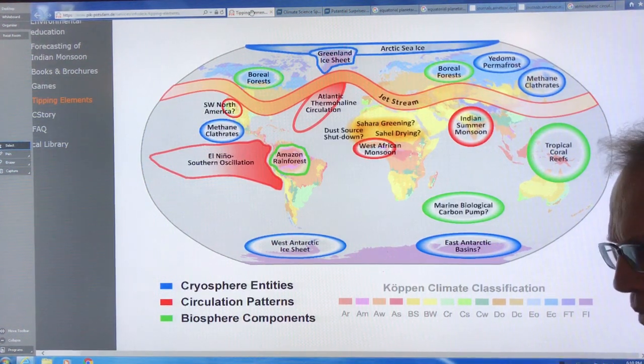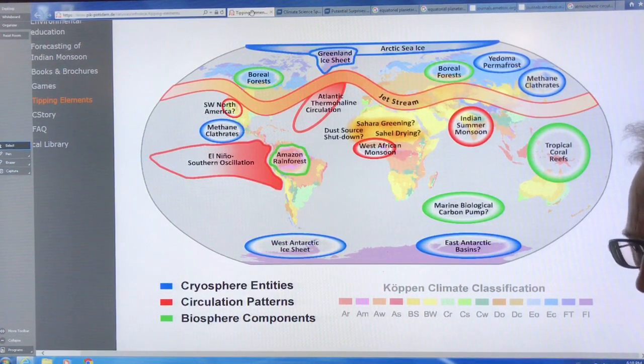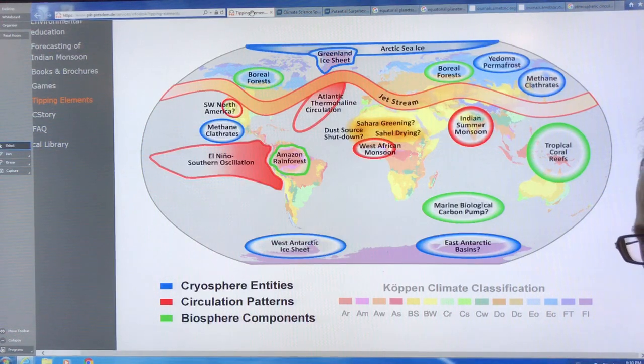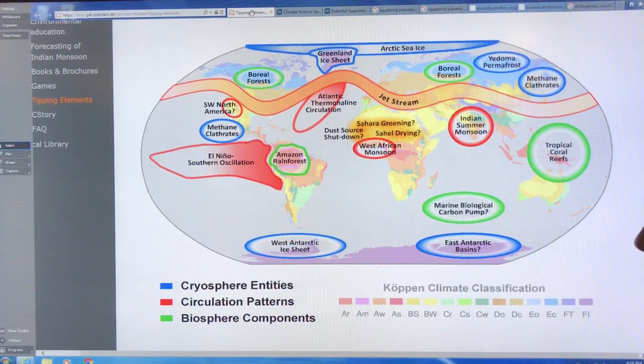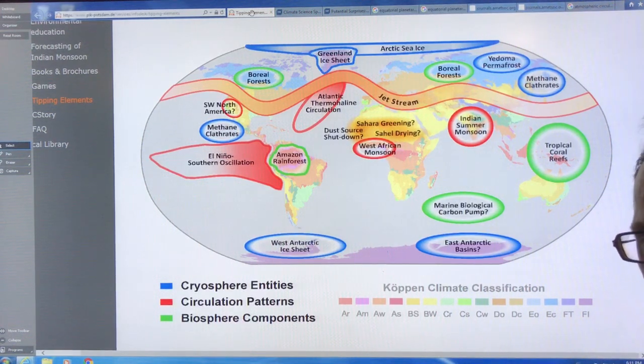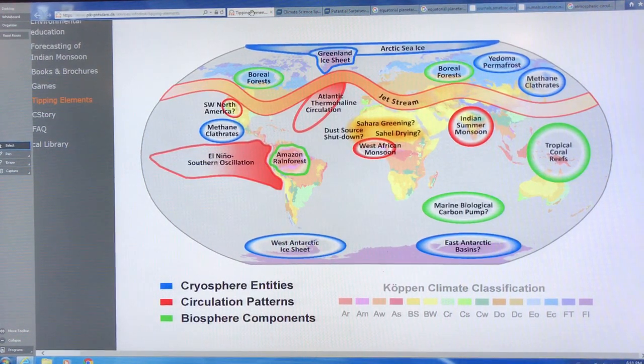So this is where we get people are concerned about like a 50 gigaton burst of methane in the Arctic, say over 10 years, or maybe five gigatons per year, over 10 years or a sudden release. And this would greatly increase the methane in the atmosphere, causing huge, very, very abrupt and rapid rise in temperatures.